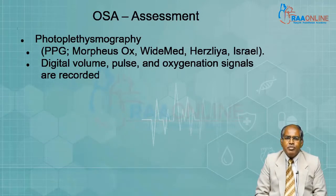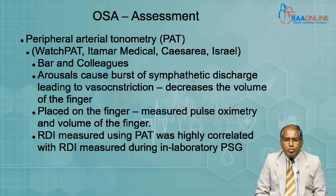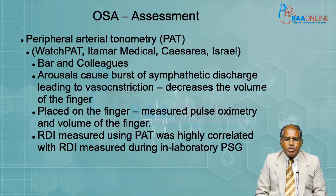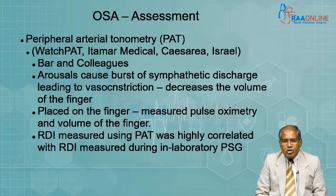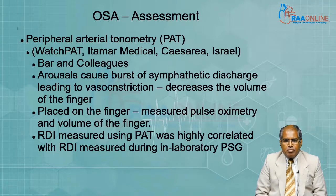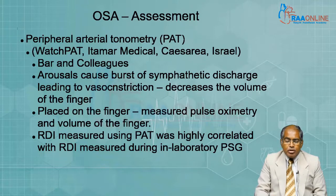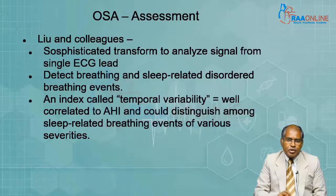One of them is photoplethysmography, which records the digital volume pulse and oxygenation. Peripheral arterial tonometry by Bar and colleagues measures the volume of the digit: when there is an arousal, there is a burst of sympathetic discharge which leads to vasoconstriction, decreasing the volume of the finger, which can be detected by a monitor. This measure has a reasonably high correlation with the respiratory disturbance index done during in-lab polysomnography.